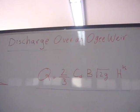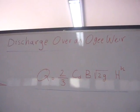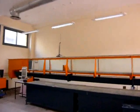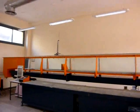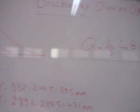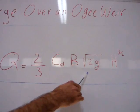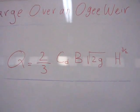The objective of our experiment is to compute the discharge over an ogee weir. The formula for the discharge is Q equals two-thirds times CD times B times the square root of 2gH to the power three-halves.